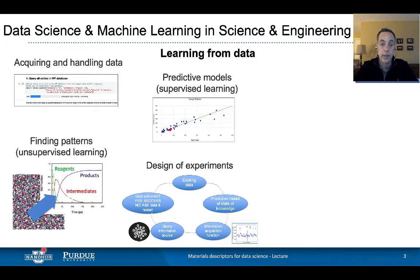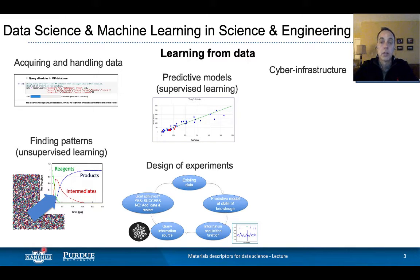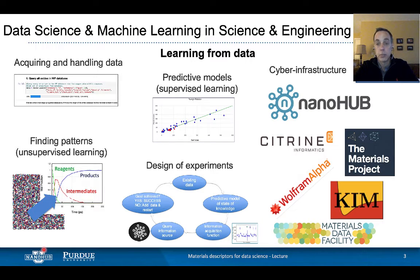An area that's very exciting — and we also have a module devoted to this — is using data science for design of experiments, where you combine existing knowledge and use data science to predict what is the next experiment you should do towards your design goal, to discover a new material or optimize a material. All of these efforts in data science would not be doable without a powerful cyber infrastructure for data and models. The community needs to share data — it needs to be discoverable and available online. We also have a module devoted to what we call FAIR data principles.